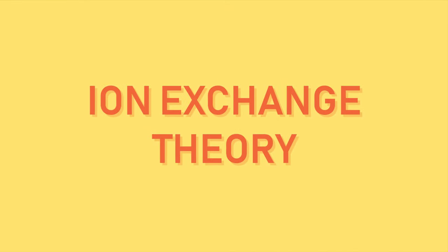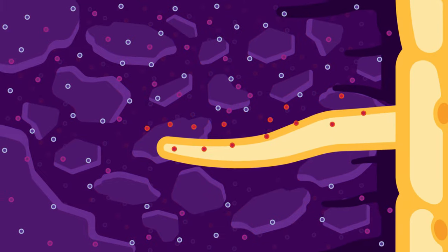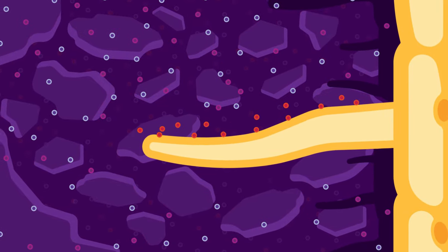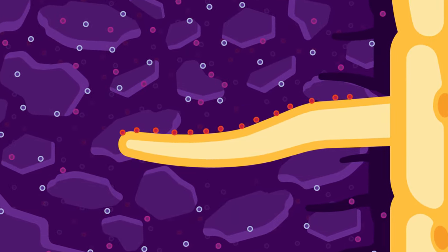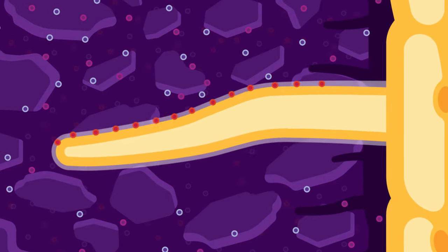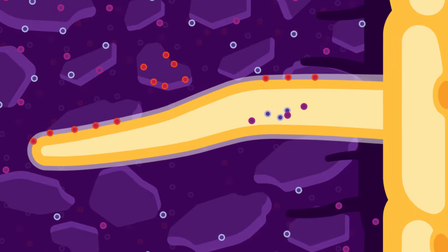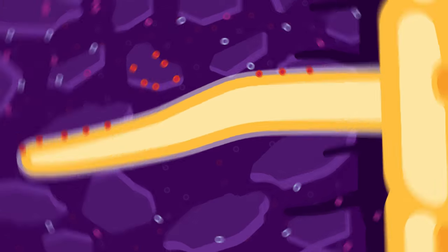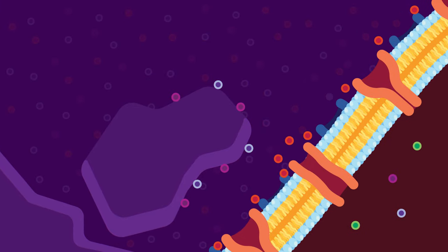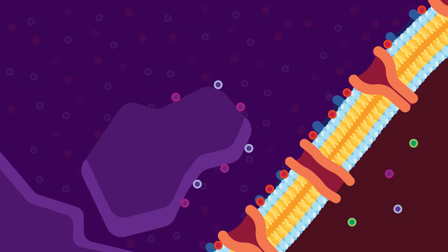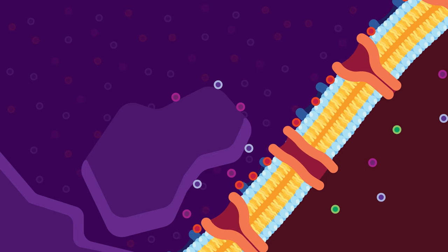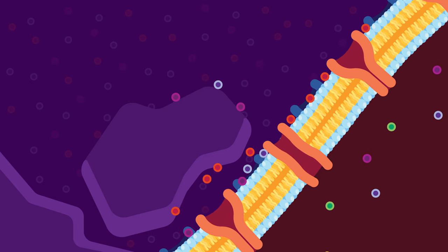Ion exchange theory: In this process, the ions, mainly cations, that are absorbed to the root surface due to the negative charge of the cell wall, are exchanged with the ions present in soil. The positively charged hydrogen ions absorbed into the surface of the roots can easily be exchanged with cations of sodium and potassium present in the soil. Similarly, an anion like hydroxyl ion from the root cell can be exchanged with anion present in the soil.